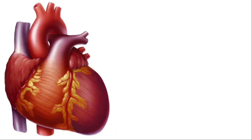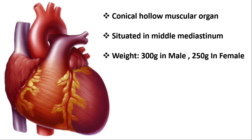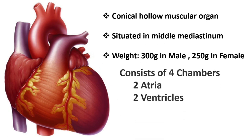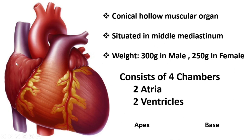Now we will discuss about the external features of the heart or gross anatomy. The heart is a conical hollow muscular organ and it is situated in the middle mediastinum, just behind the sternum. Its weight is 300 grams in males and 250 grams in females. It consists of four chambers, two atria and two ventricles. The apex is directed downward and toward the left side, lying in the left fifth intercostal space, and the base is directed backwards, formed mainly by the left atrium and partly by the right atrium.